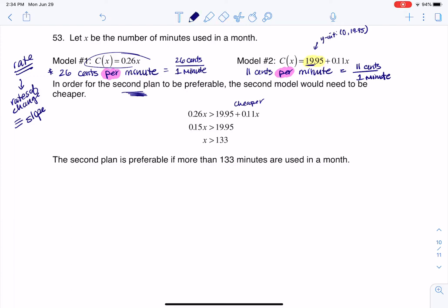And we talked about how to solve linear inequalities back in chapter two. So I'm going to subtract, even though I don't have space for it here, I'm going to subtract 0.11x from each side. And then I get 0.15x over here and 1995 here. I'm going to divide both sides by 0.15.